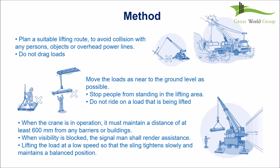Plan a suitable lifting route to avoid collision with any persons, objects, or overhead power lines. Do not drag loads. Move loads as near to the ground level as possible. Stop people from standing in the lifting area. Do not ride on a load that is being lifted. When the crane is in operation, it must maintain a distance of at least 600 mm from any barriers or buildings. When visibility is blocked, the signaller shall render assistance. Lift the load at low speed so that the sling tightens slowly and maintains a balanced position.